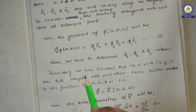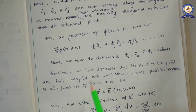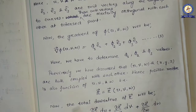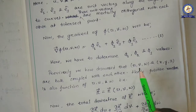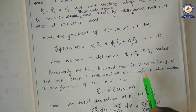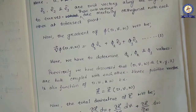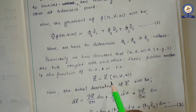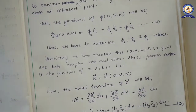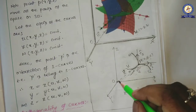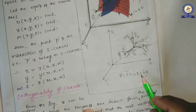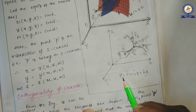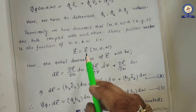Since u, v, w and x, y, z are coupled with each other, the position vector r is also a function of u, v, w. The position vector from the origin to a point is i̅x + j̅y + k̅z in Cartesian coordinates. Since x, y, z are each functions of u, v, w, r can be written as a function of u, v, w.